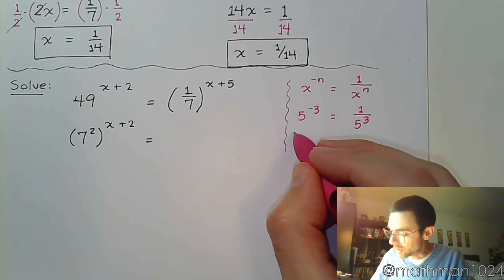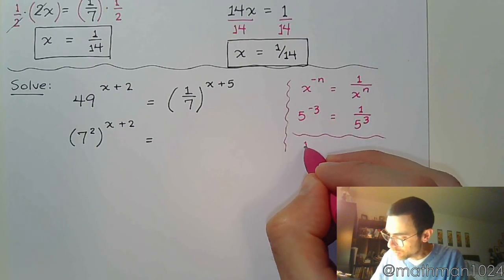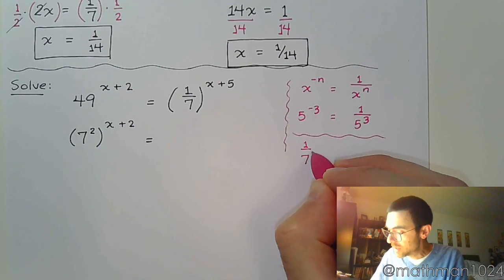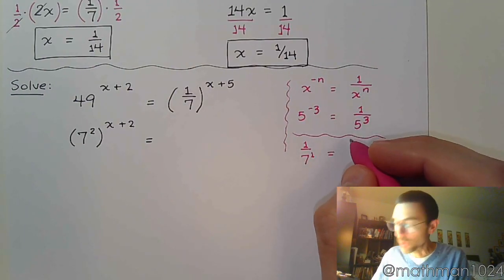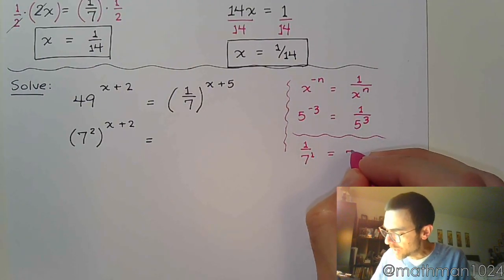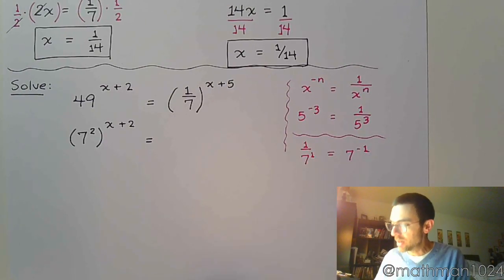So right now in our example, we have 1 over 7 to the 1st. Since that's in the denominator, that means we have a negative power when I rewrite this without the fraction, excuse me, and we would have 7 to the negative 1st.